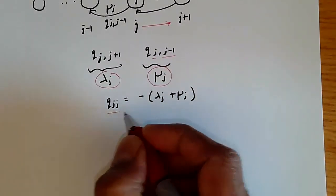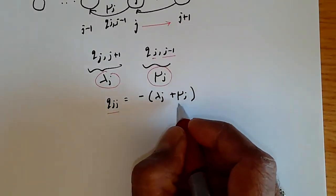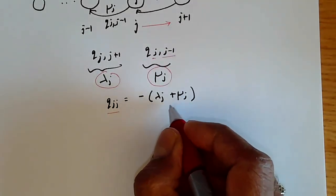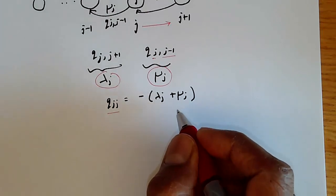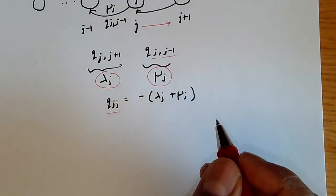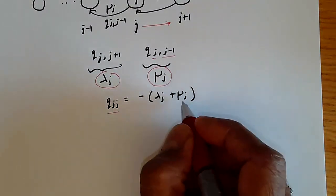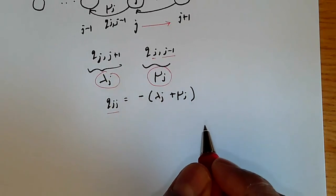As before, q j, j is going to be the negative of the sum of these two rates. And that's going to be minus lambda plus mu j. This can be viewed as the rate at which you stay in the same state. You stay in state j with this negative rate.